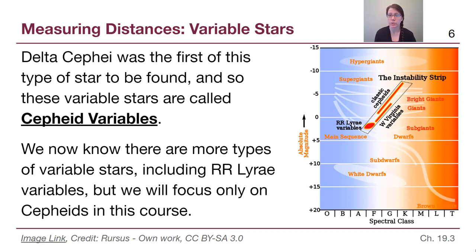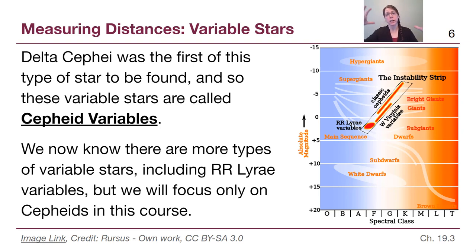Cepheid variables are not the only type of variable star, and there are many details we could explore in a course more focused on stars. But because this is a survey course, we'll just focus on Cepheids as an example. The key point is these stars are not stable — they are getting bigger and smaller, meaning they have already left the main sequence. We can see that in the Hertzsprung-Russell diagram on the slide. All variable stars studied this way are unstable stars; they don't have hydrostatic equilibrium keeping them steady, and that's why they pulsate.